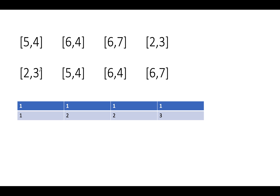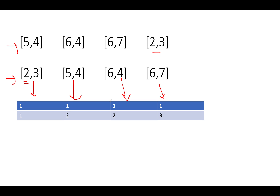Now let's move on to the Russian Doll problem. We have the array: [5,4], [6,4], [6,7], [2,3]. The first thing we do is sort this array by width or height. Then we apply the same rules as discussed in the LIS problem, with the only difference being that we must satisfy both width and height conditions. We initialize the complete dp array to 1.